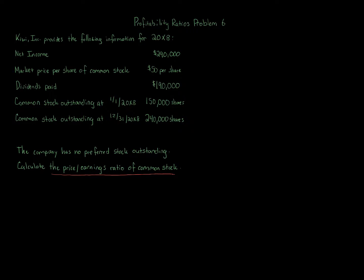There's the ratio of net sales to assets, the rate earned on total assets, the rate earned on total stockholders equity, rate earned on common stockholders equity. The difference between those two: one has preferred, one doesn't. Then you've got earnings per share, price to earnings ratio, which is what we're focusing on here, just on common stock though. You've got the dividends per share of common stock and the dividend yield.